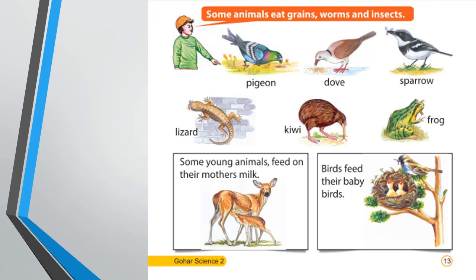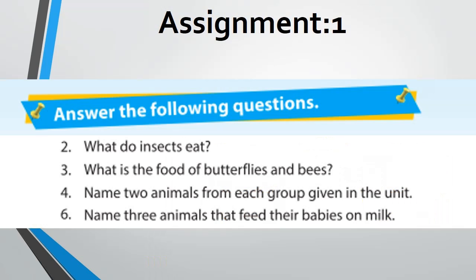For further understanding, there will be four assignments. First assignment: answer the following questions. First question: what do insects eat? Next question: what is the food of butterflies and bees?